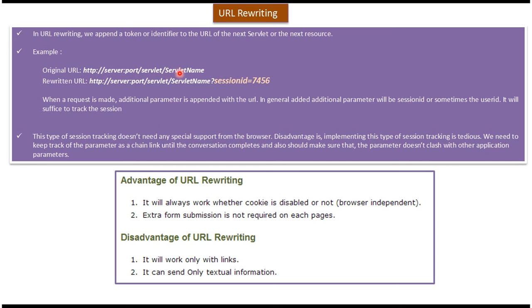Here you can see the original URL, and here you can see the rewritten URL. In the rewritten URL, what we are doing is appending a token or identifier. In this case, the token or identifier is a session ID. We can append a session ID or user ID to track the user. Whenever a request is made, this additional parameter is appended to the URL, and in this way we can track the user.